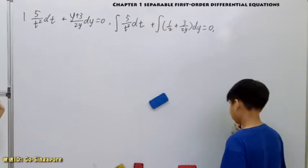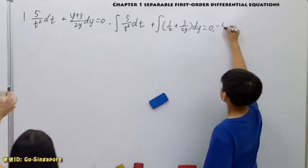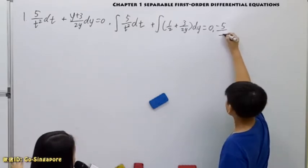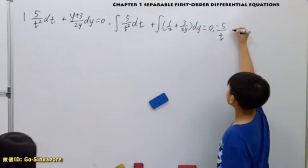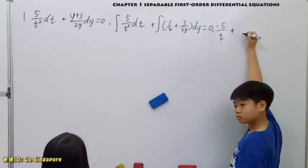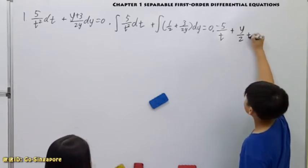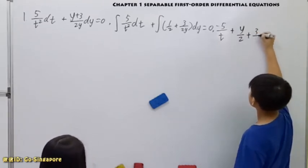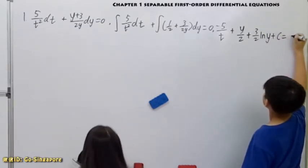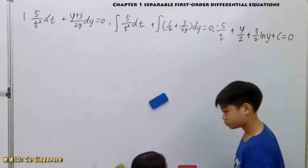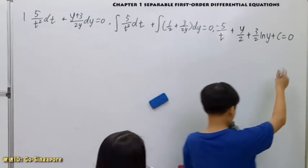For the first part, it will be negative 5 over t. And then, plus y over 2 plus 3 over 2 log y. Plus C, then equals 0.